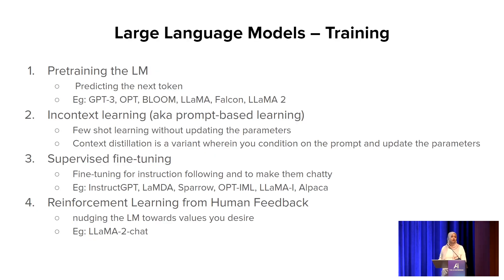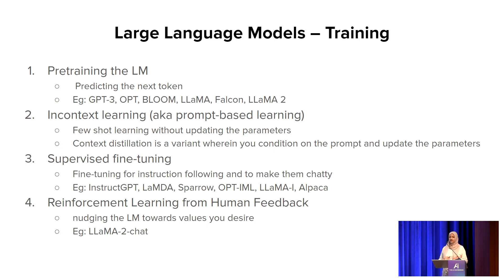There are essentially four types of training for large language models. The first is pre-training the language model — predicting the next token — with examples like GPT-3, OPT, Bloom, LLaMA, Falcon, or LLaMA 2. The second type is in-context learning or prompt-based learning, where you do few-shot learning without actually updating the model parameters — you give all examples in the context and hope the model learns the new task from them.